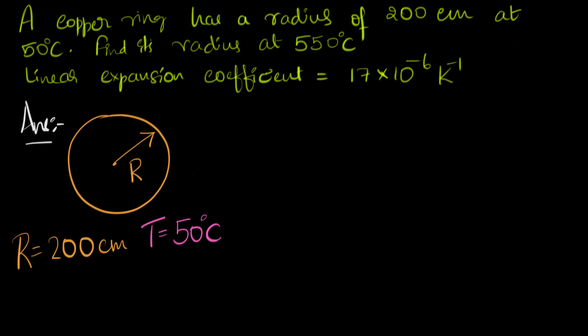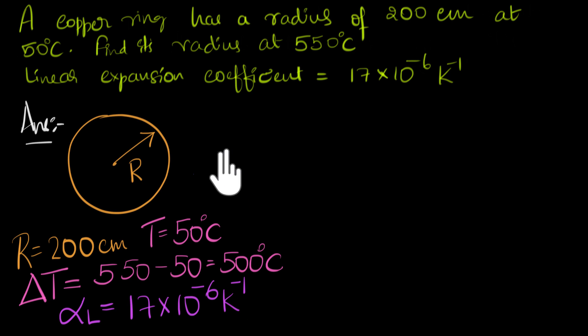We would be interested in the change in the temperature, right? That's what matters to us, not what the temperature is, but how much has the temperature changed. Let's call it as delta T. The temperature change is 550 minus 50, that is 500 degrees Celsius. And what else is given to us is alpha. This linear expansion coefficient, we usually call it as alpha L, and that's given to us as 17 times 10 to the power minus 6 Kelvin inverse. This was the data.